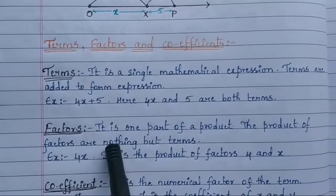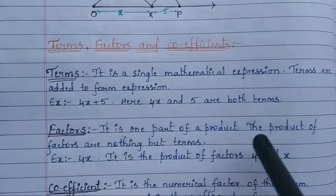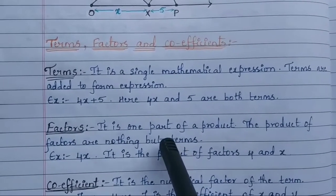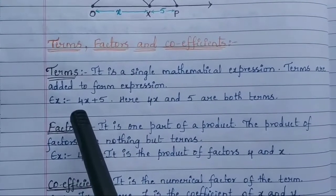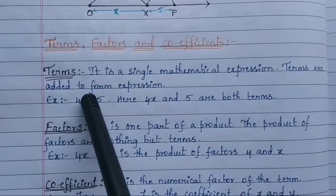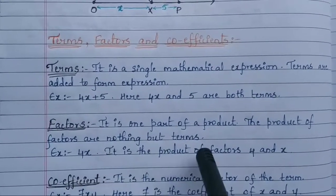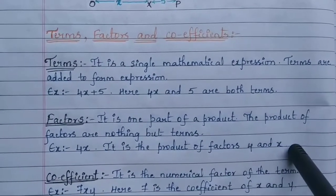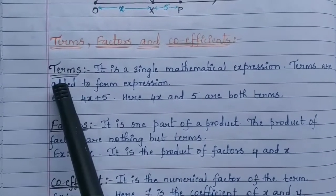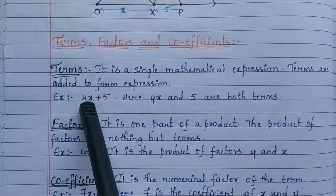A factor is one part of a product. The product of factors gives us a term. For example, 4x is the product of factors 4 and x. So here two factors — 4 and x — are used, and their product gives us the term 4x.